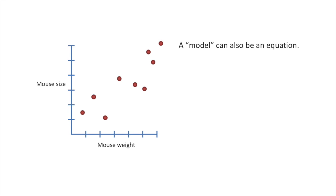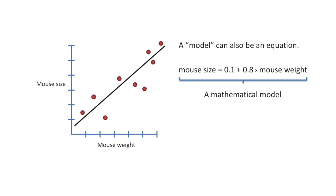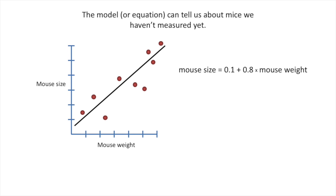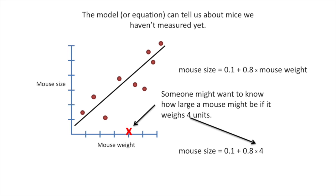A model can also be an equation. Here we have the equation for the line that we have fit to the data. The equation is a mathematical model. The model, or equation, can tell us about mice we haven't measured yet. Someone might want to know how large a mouse might be if it weighs 4 units. So we plug that value into our equation, and we get mouse size equals 3.3.